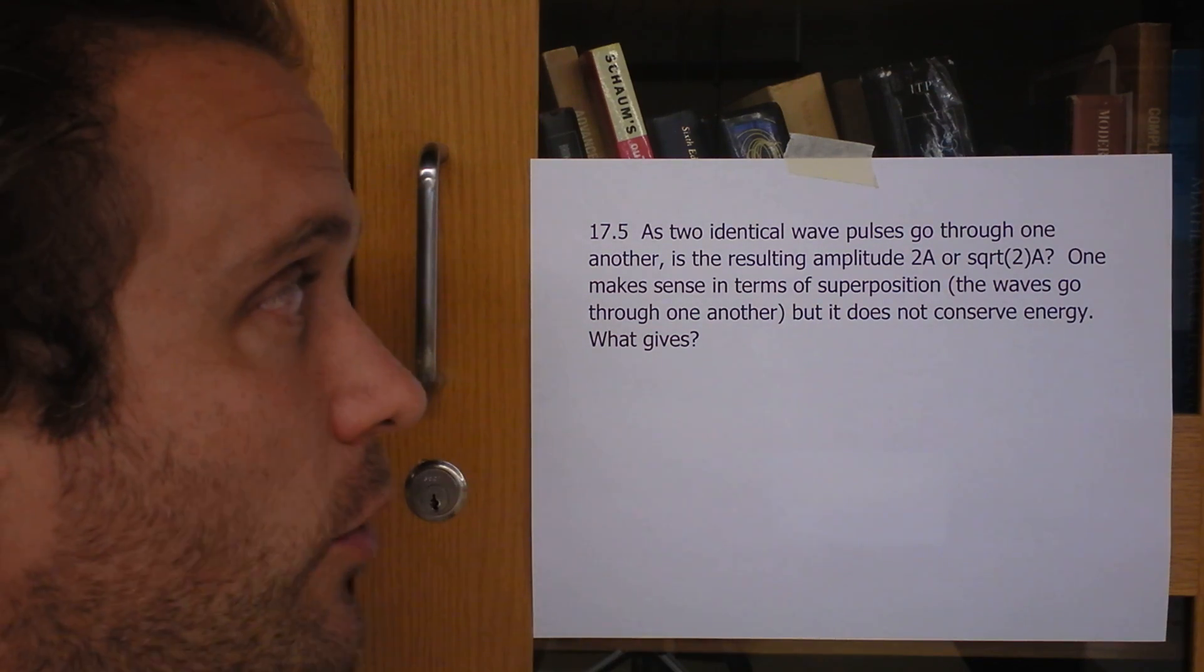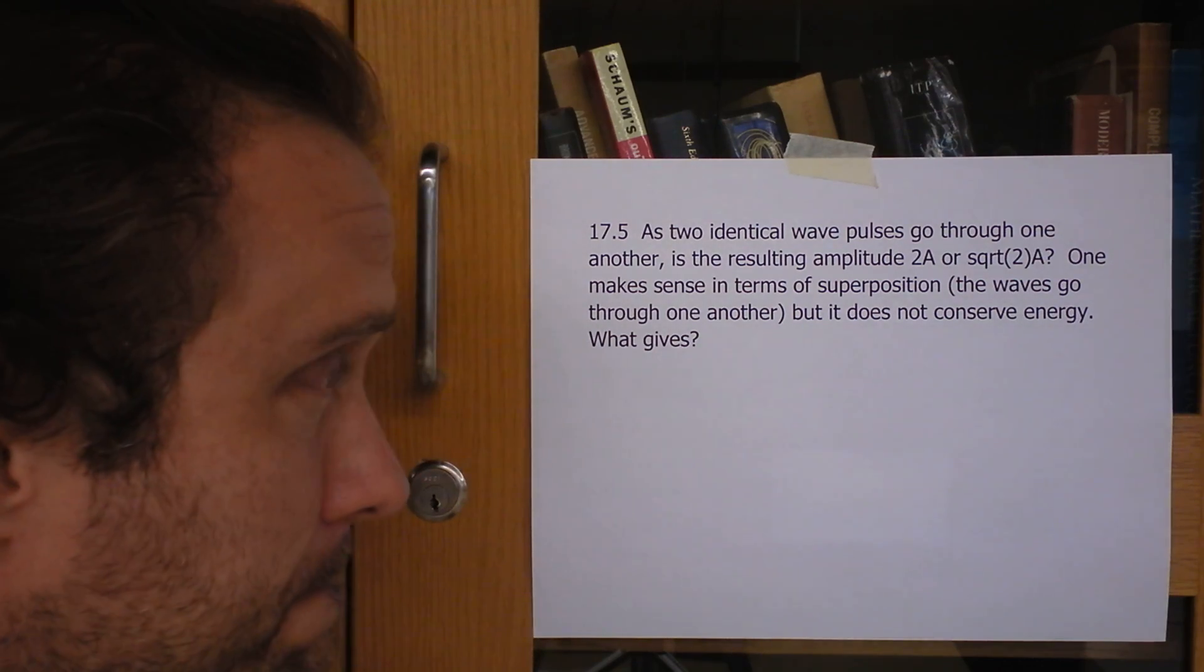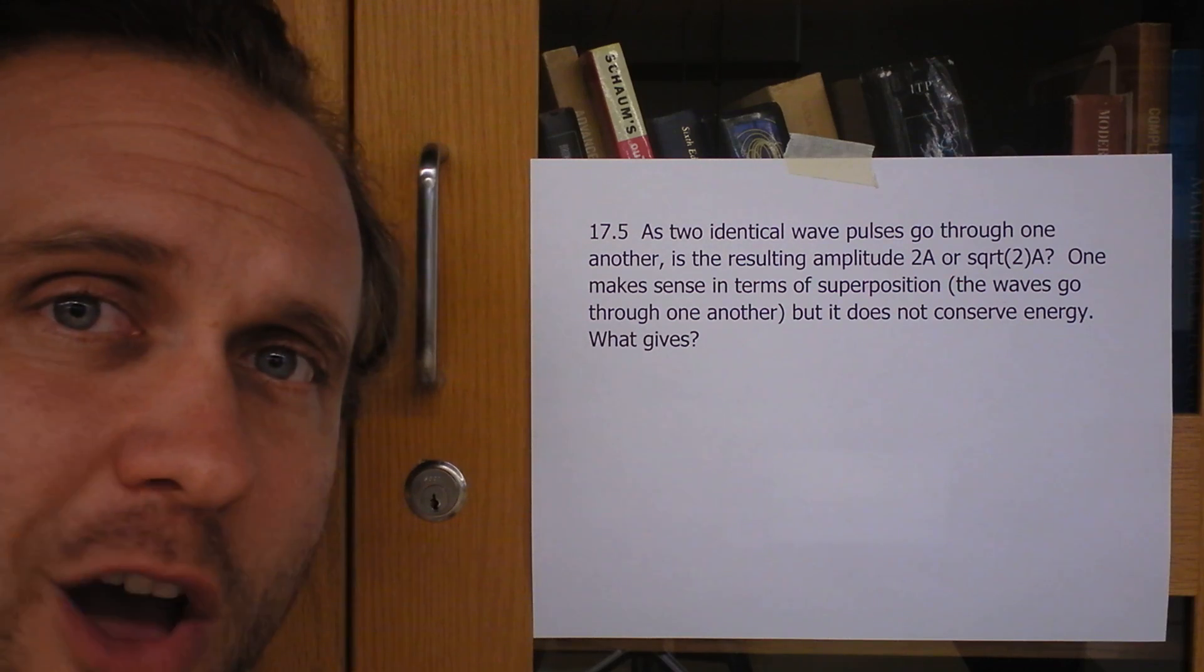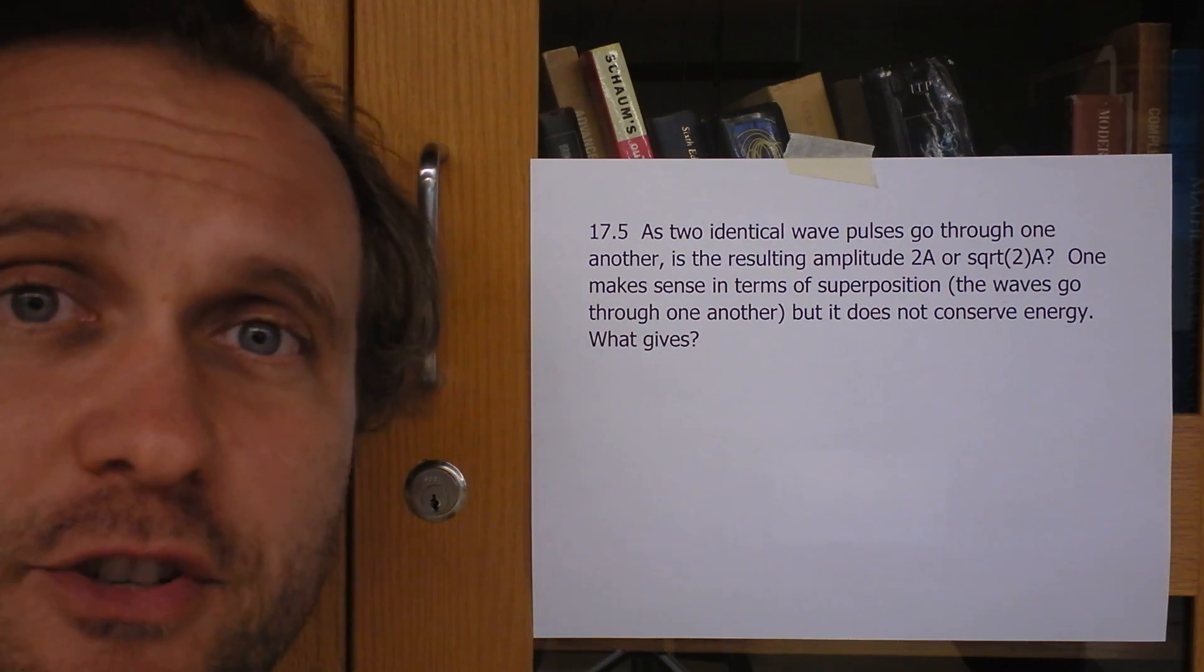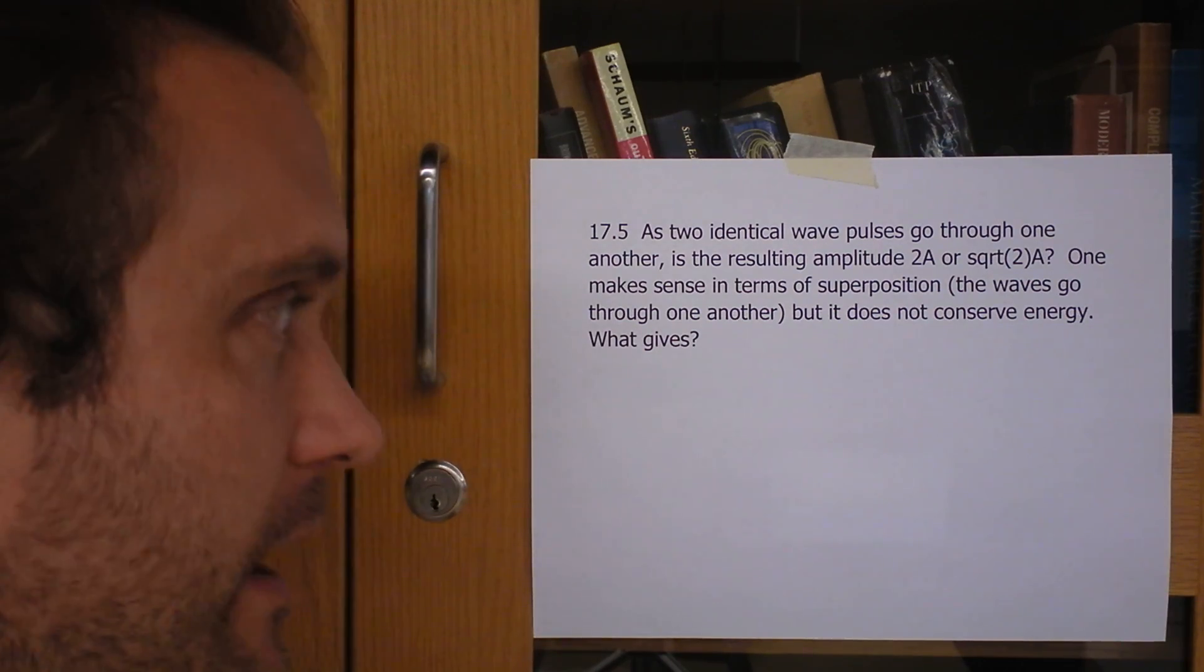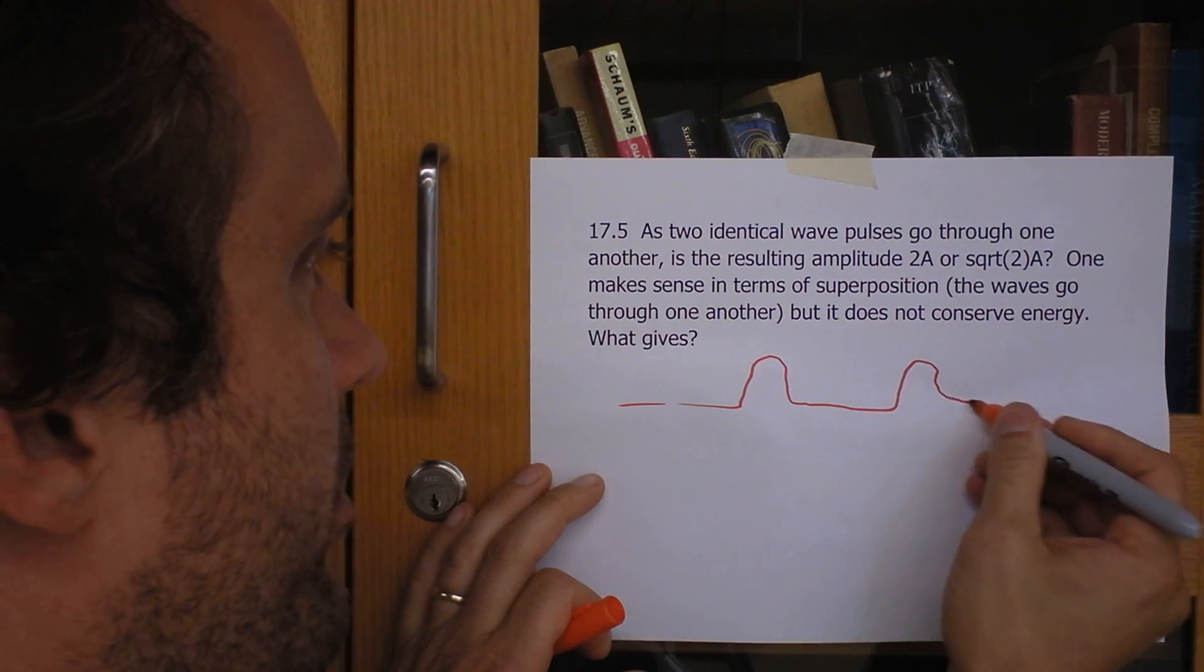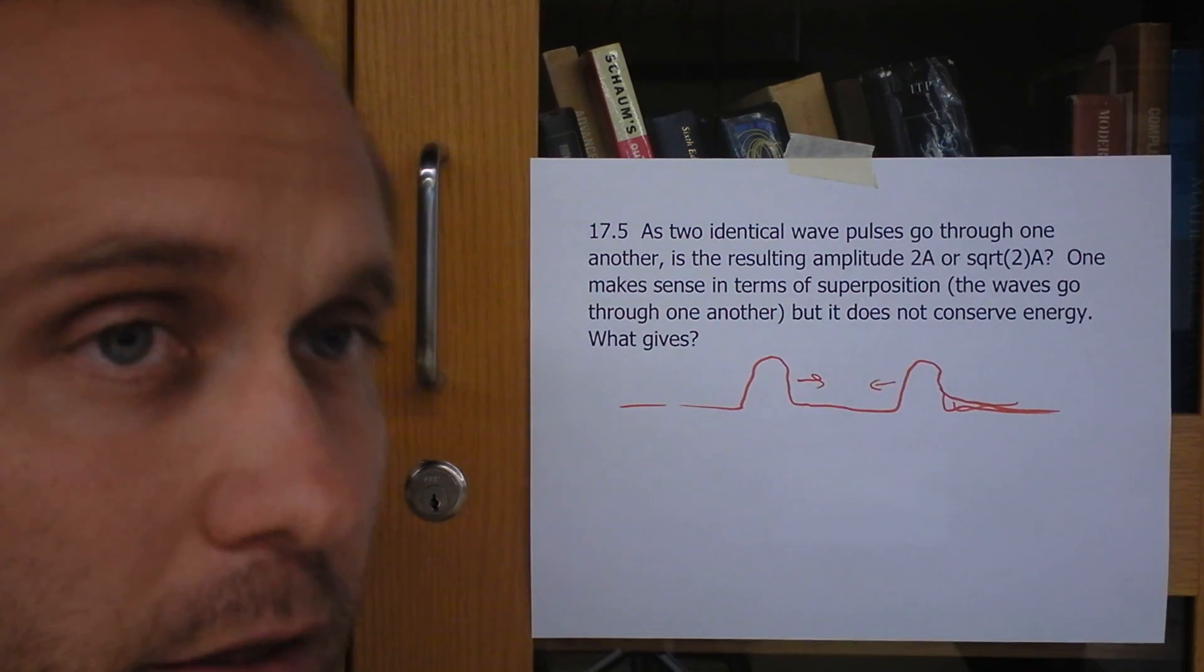As two identical wave pulses go through one another, this is a particularly hard problem, is the resulting amplitude 2A or square root 2A? One of them makes sense in terms of superposition. So I'm thinking here's a pulse and here's another pulse. Whoa, gross. And they are going towards one another.